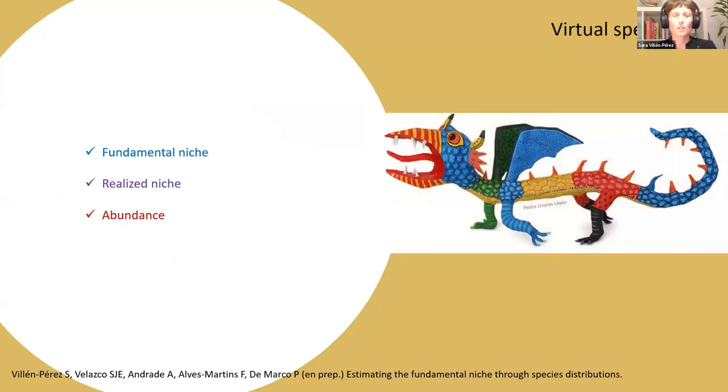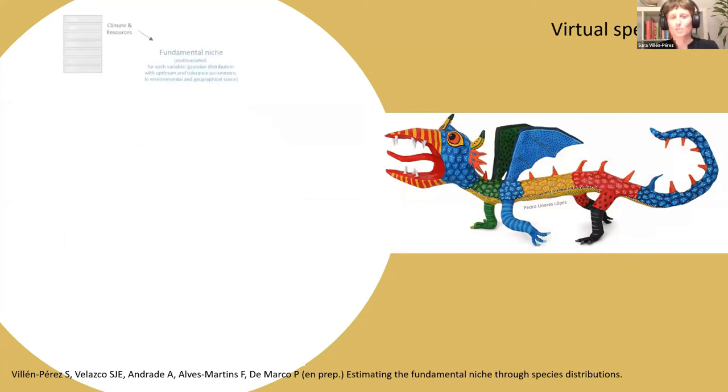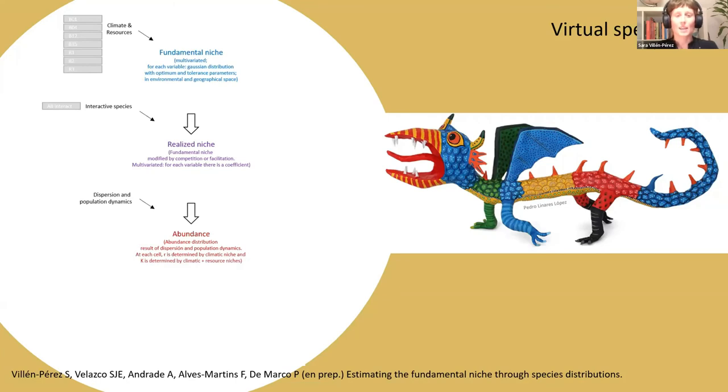To test this hypothesis, we needed species with known fundamental niche, realized niche, and abundance. So we worked with virtual species. We generated the fundamental niche for a variety of climatic and resource variables. Then we included interactive species, both facilitator and competitor species, so we have the realized niche. We included also dispersion and population dynamics so we get the abundance of the species, and we sampled it to get the final simulated database.